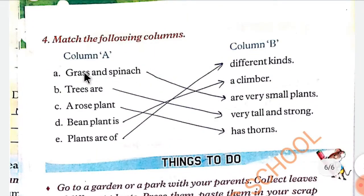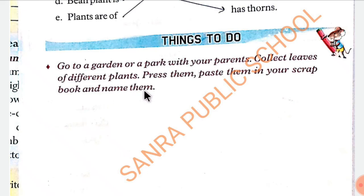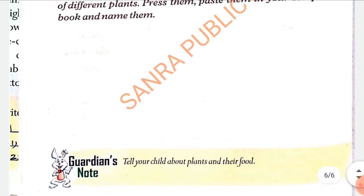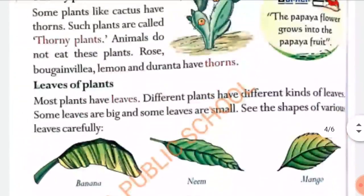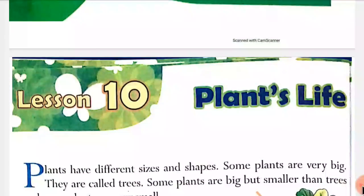Match column A with column B. Grass and spinach are very small plants. Trees are very tall and strong. Rose plant has thorns. Bean plants are climbers. Plants are of different kinds. Activity: Go to a park or garden with your parents. Collect leaves of different plants, press them, paste them in your scrapbook and name them. Thank you children — the name of the lesson is 'Plants Life'. Read this lesson again and again. Thank you!